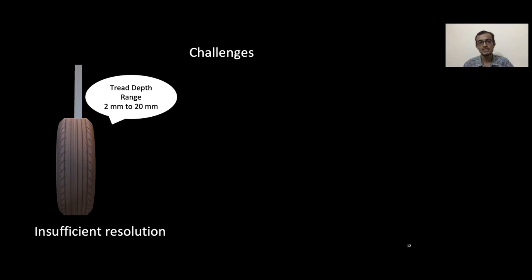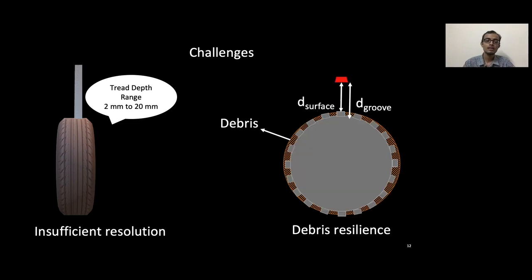What I mean by that is that the surface and the groove reflections cannot be distinguished by any radar which is out there today. To add to this, in the presence of debris, the radar cannot even distinguish between the groove reflection and the debris reflection. So both these challenges result in ambiguous measurements at the radar, and this is precisely why we have to solve these first.